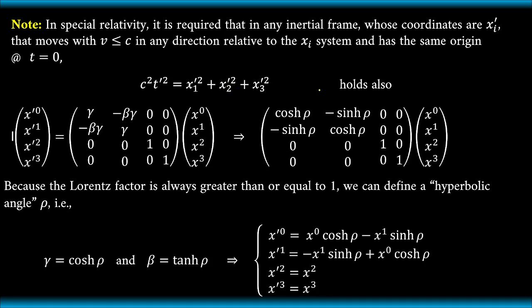So we have the rotated coordinate system with x prime⁰, x prime¹, x prime², and x prime³. These are the coordinates, which is why we do not treat the superscripts as squares. This can be written as a matrix equation: the matrix operator is given by gamma, negative beta gamma, zero, zero in the first row, and so on, times the unchanged coordinate vector x⁰, x¹, x², x³. Because the Lorentz factor gamma is always greater than or equal to one, we can define a hyperbolic angle denoted by rho.